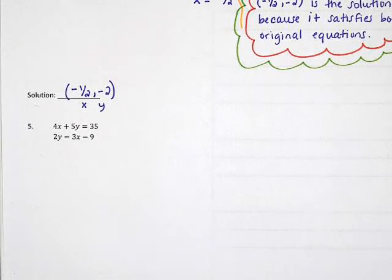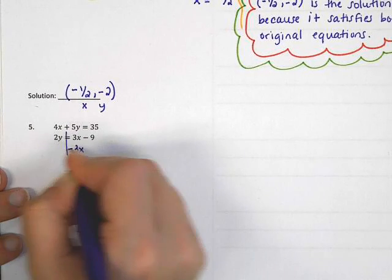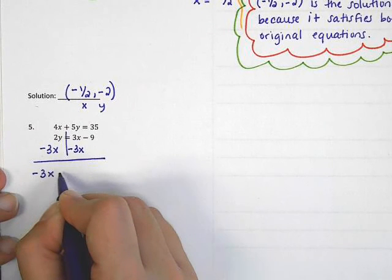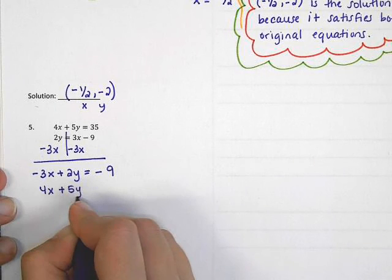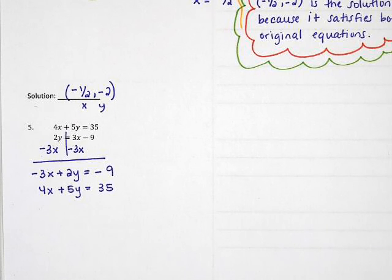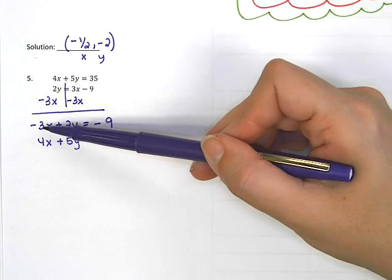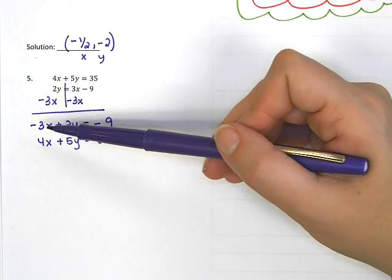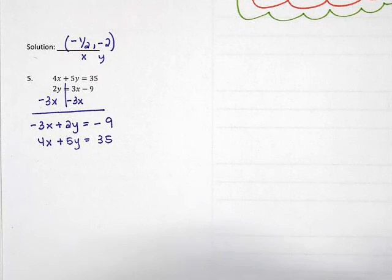This is the part that a lot of students forget, so it's really important to remember to write that down. Now let's take a look at number 5, which looks a little different. In number 5, the variables are not lined up — the x's, y's, numbers, and equals are not on top of each other. So I'm going to take the second equation and move the x by subtracting 3x to the other side, which gives me negative 3x plus 2y equals negative 9. Now copying the first equation — 4x plus 5y equals 35 — I can see everything lines up. The 3 and 4 do not cancel, neither do 2 and 5. There's nothing I can multiply 3 by to get 4, and nothing to multiply 4 by to get 3. Same with 2 and 5. So this is an example where you need to multiply both original equations.